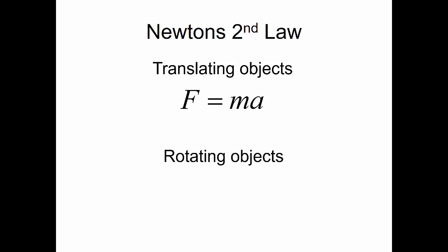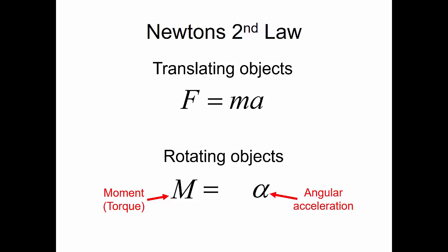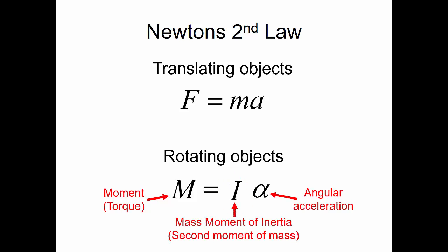What happens when we have rotating objects? Typically we look at a rotating force as a moment or a torque, and a rotating acceleration would be an angular acceleration. So what do we put in place of the mass? This is what we call the mass moment of inertia, which is also the second moment of the mass. For translating objects we have force equals mass times acceleration, and for rotating objects we have that a moment is equal to the mass moment of inertia times the angular acceleration.